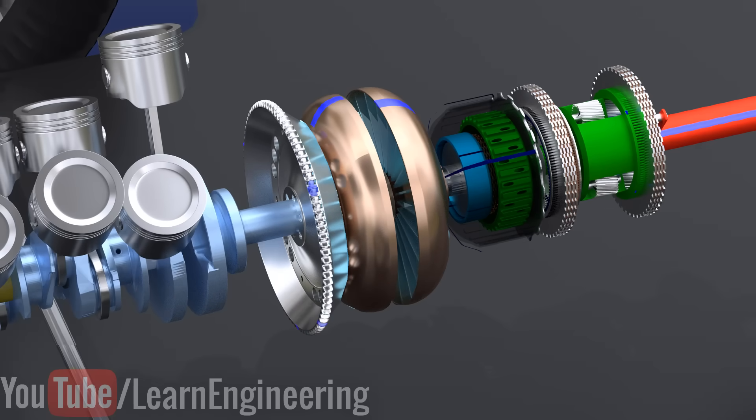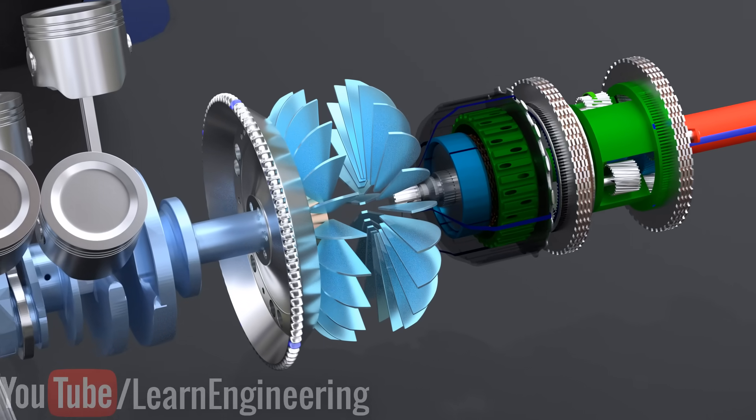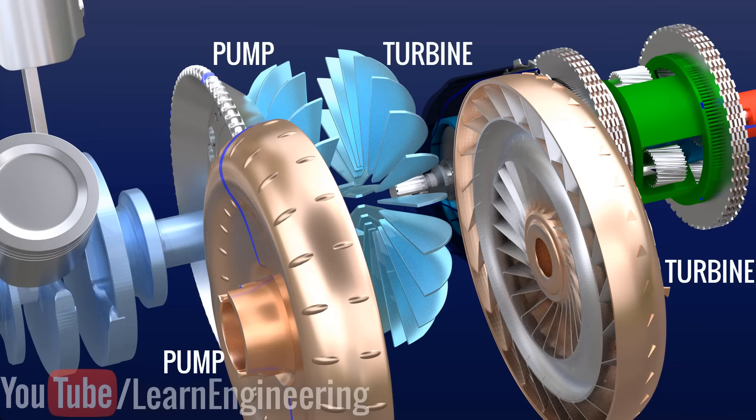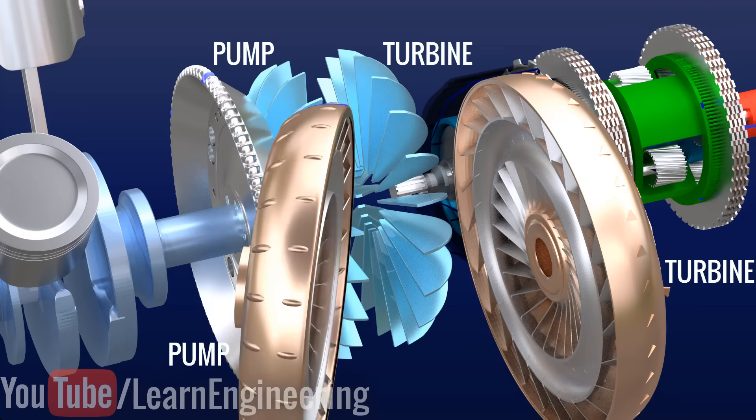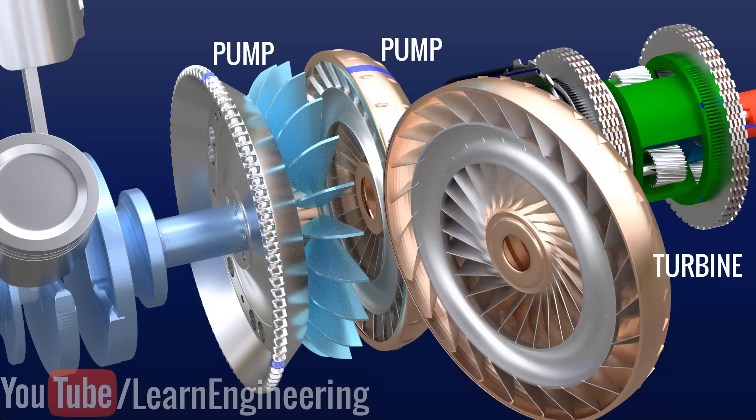This is a simplified torque converter, but you will never find this kind of configuration in any actual torque converter. The pump and turbine of an actual torque converter is shown here. In an actual torque converter, the pump sits near to the transmission, and the turbine sits near to the engine.